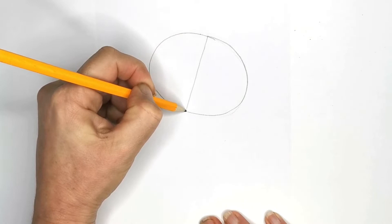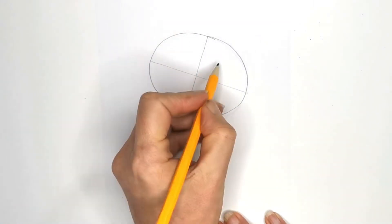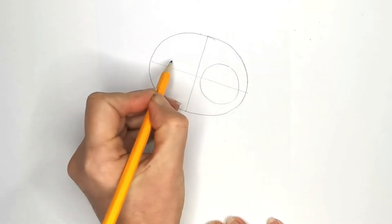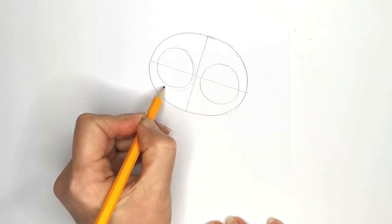Let's draw in the centerline, slightly on an angle because we want him to have a slight tilt to his head. Let's get these great big eyes in, as big as we can get them on the page pretty much.